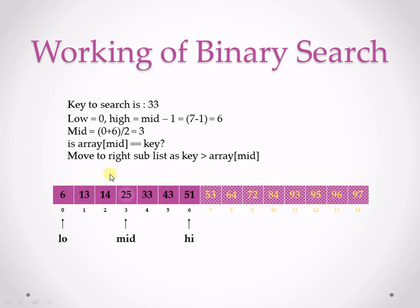Now I need to find the mid of the current list. Low is 0, high is 6, so mid is low plus high divided by 2, which is 0 plus 6 divided by 2 equals 3. My mid is at position 3. I check whether array of mid is equal to my key. Mid of array is 25, and my key is 33 — they are not equal. So I decide which sublist to move to: if key is greater than array of mid, move to the right sublist; if key is less than mid, move to the left sublist.